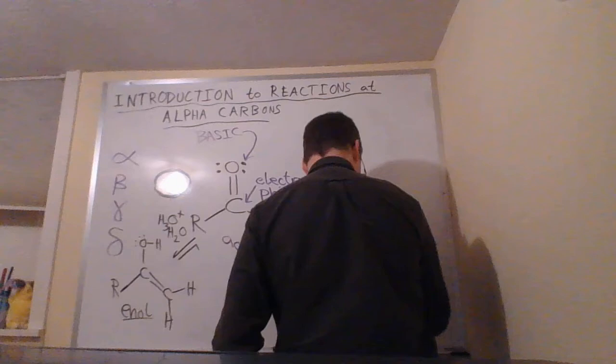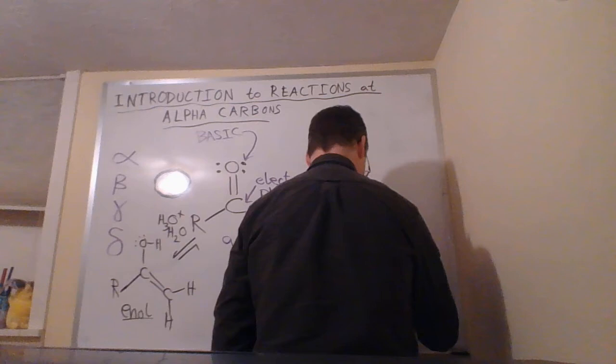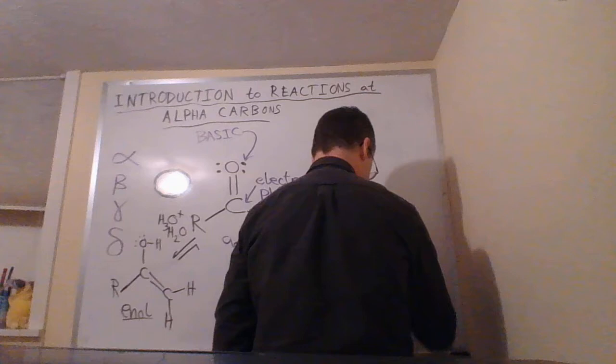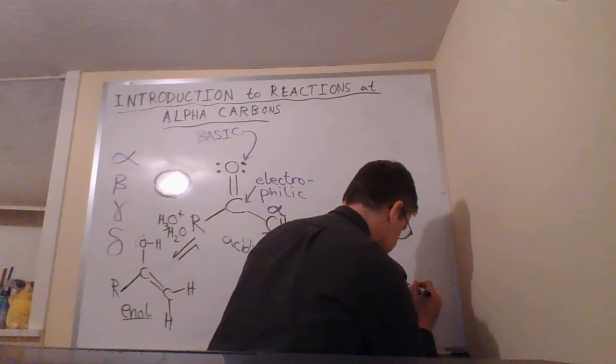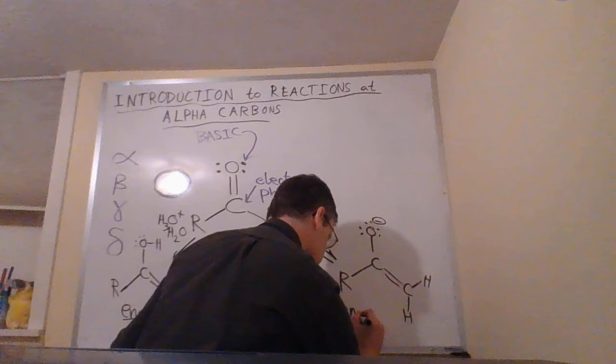Sometimes this is an equilibrium that favors this, sometimes it favors that. And that will make something called an enolate ion.